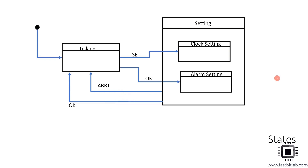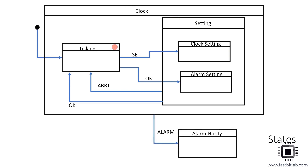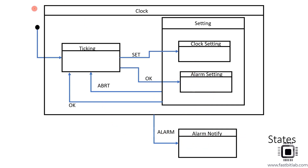After that, we can create one more super state for all these states — let's call it the super state clock. We can introduce one more event or signal called alarm, which takes us to the alarm notify state, because an alarm can happen at any place — while in ticking, clock setting, or alarm setting. So instead of three separate transitions, you create one super state called clock and give one common alarm transition from it to the alarm notify state.